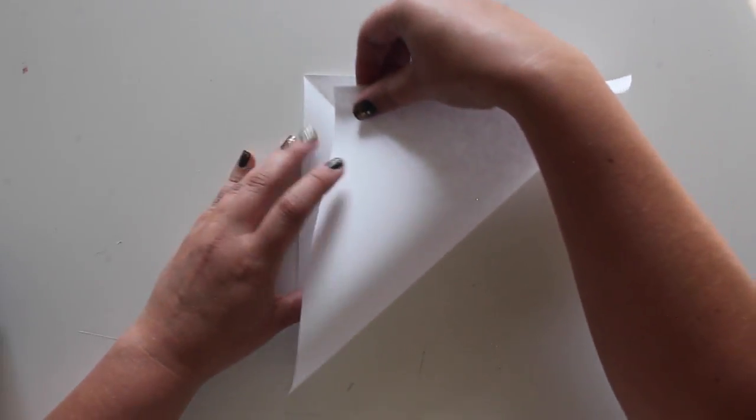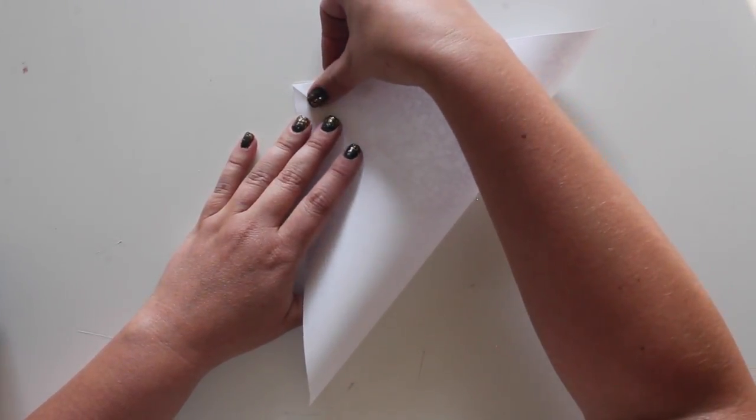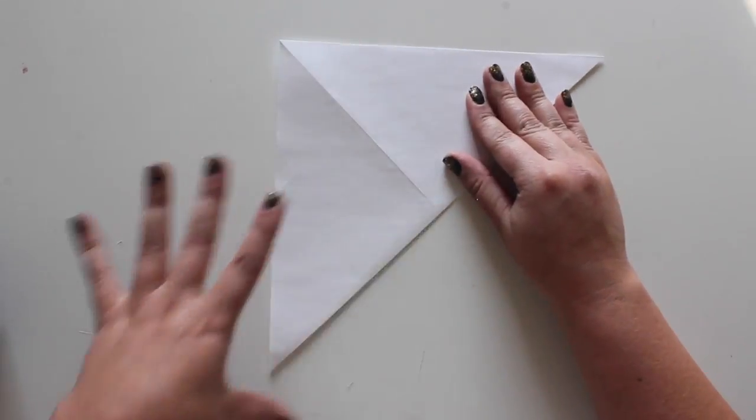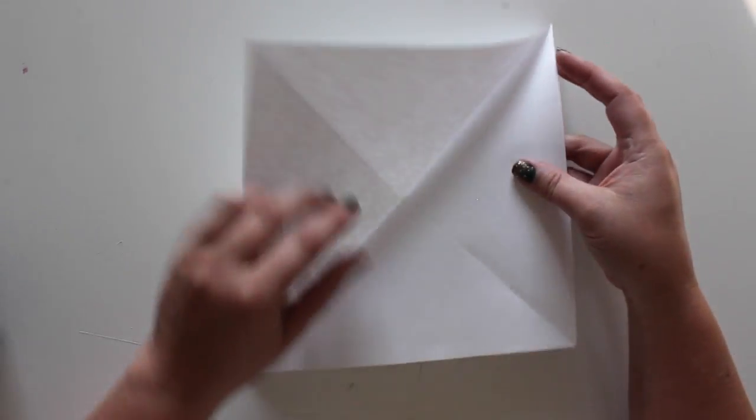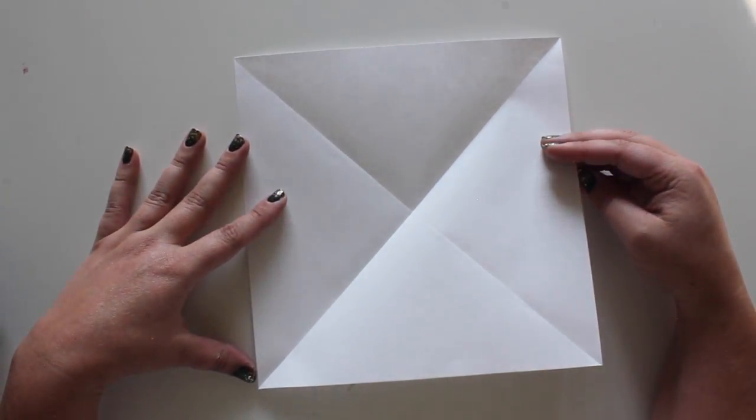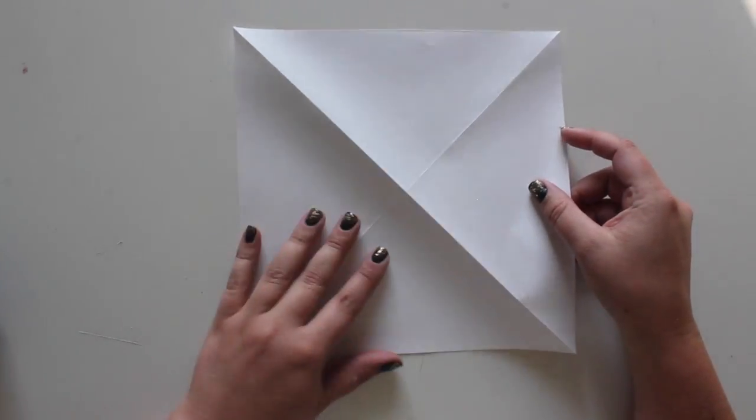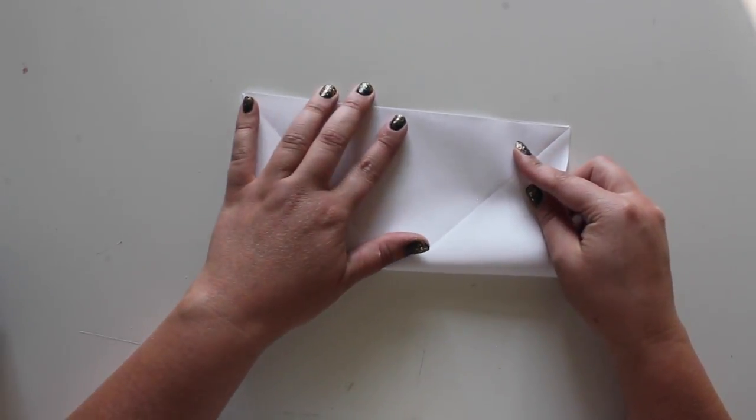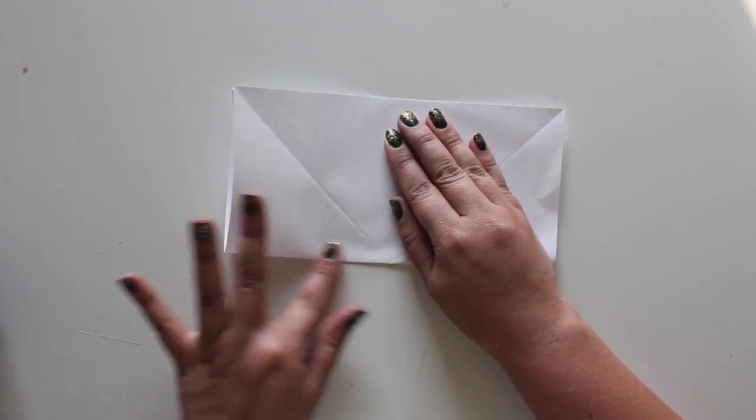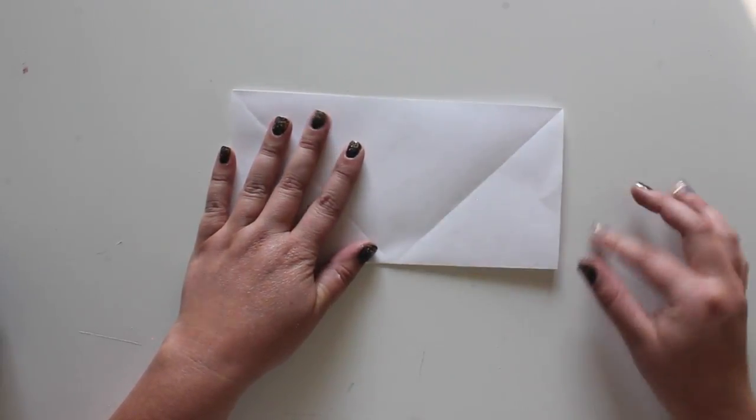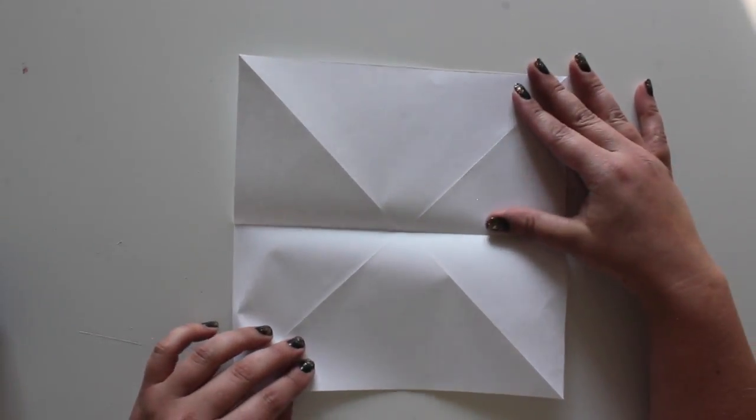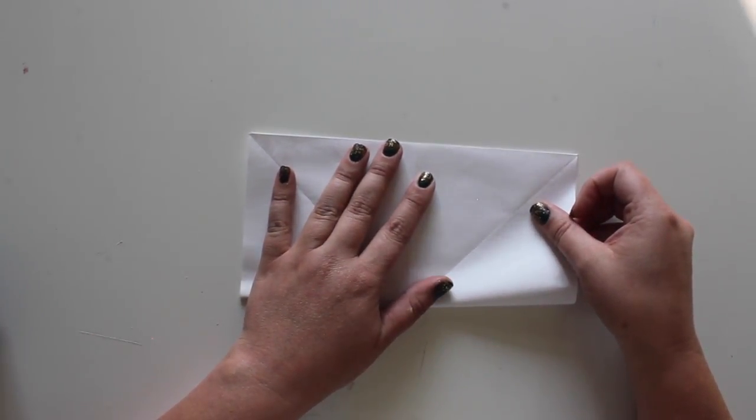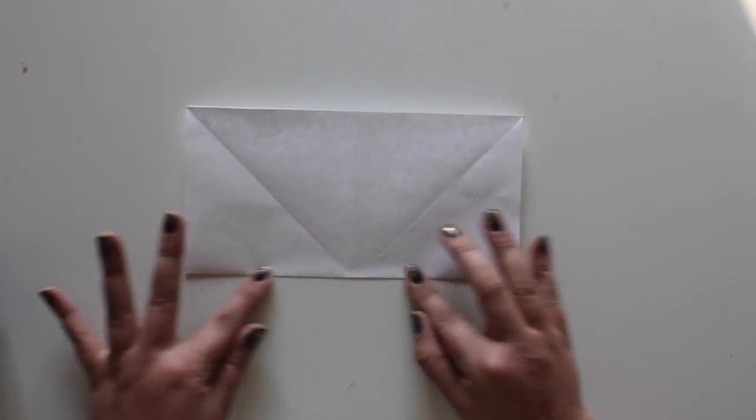Open, then fold in half diagonally the other direction. Open the paper and there should be an X fold on the paper. Turn the paper over. Fold the bottom edge up to the top. Open, turn 90 degrees, then fold the bottom to the top again. Now when you unfold the paper, you should have folds that look like an asterisk.